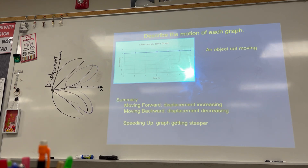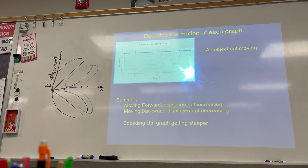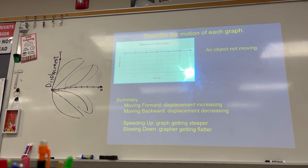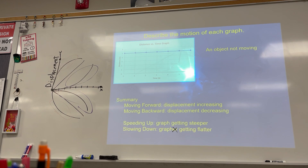If I'm slowing down, I either have this graph or that graph. What do those graphs have in common? The graph is getting flatter. If you're slowing down, the graph gets more flat or more horizontal.